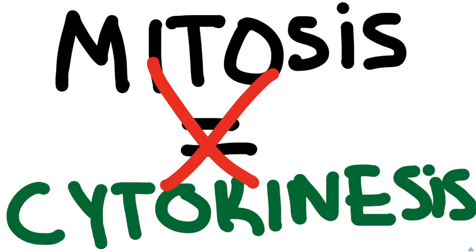Mitosis and cytokinesis are two different, yet similar, processes. Mitosis is what splits the chromosomes. However, cytokinesis is what actually splits the cytoplasm and splits the cell into two daughter cells.